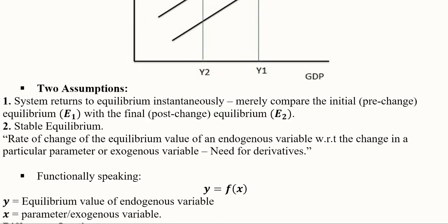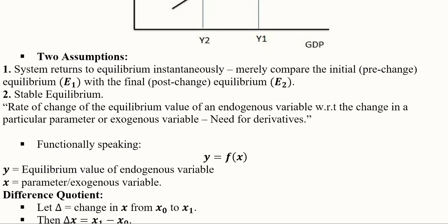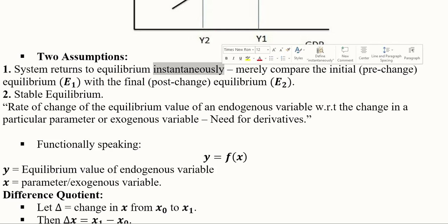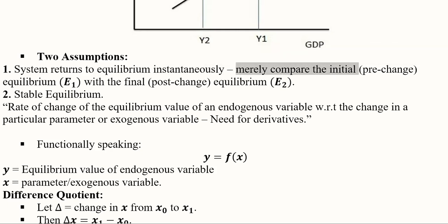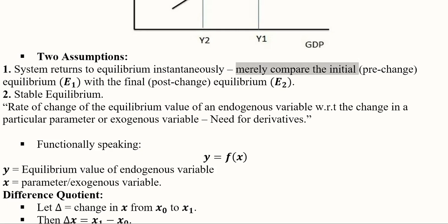There are two basic assumptions in comparative statics. First, the equilibrium is achieved instantaneously — we simply compare the pre-change value E1 with the post-change value E2, and any value in between should not be considered. Considering in-between values would turn it into a dynamic analysis where time is the independent variable.